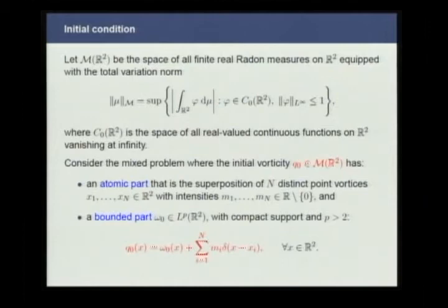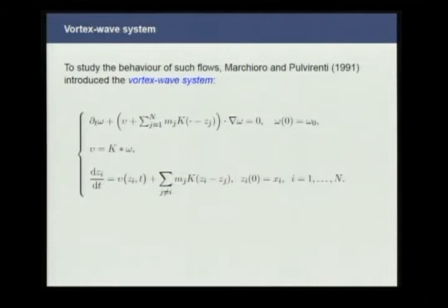In order to study two-dimensional flows with a continuously distributed vorticity and a superposition of point vortices, Marchioro and Pulvirenti in 1991 introduced the vortex wave system. This model separates the evolution of the bounded part omega, which evolves through the Euler equation, from the evolution of the point vortices that evolve using the point vortex system. The two equations are coupled by means of the Biot-Savart law.